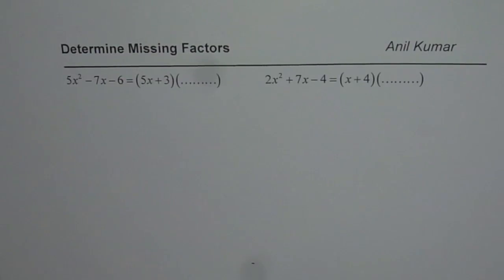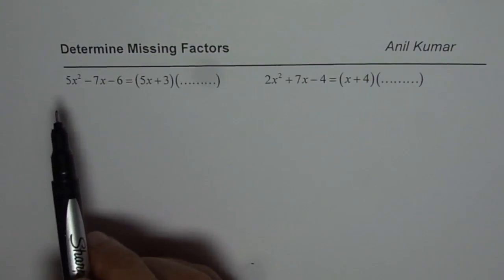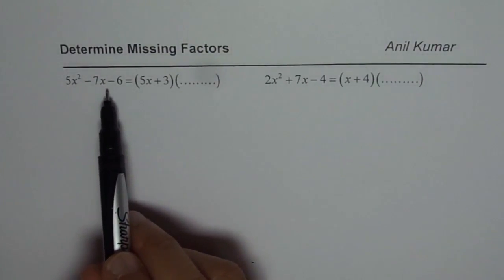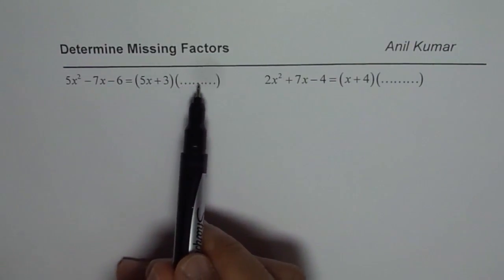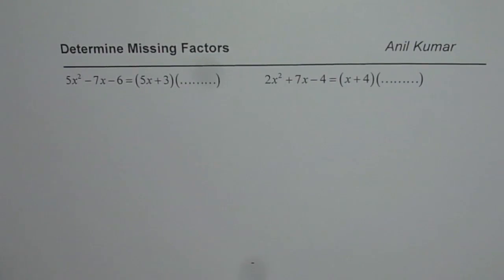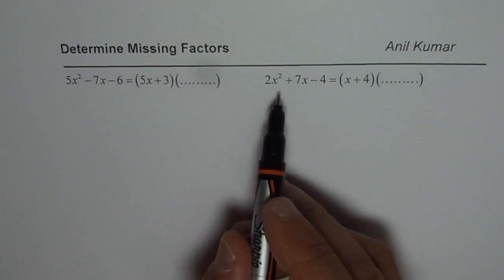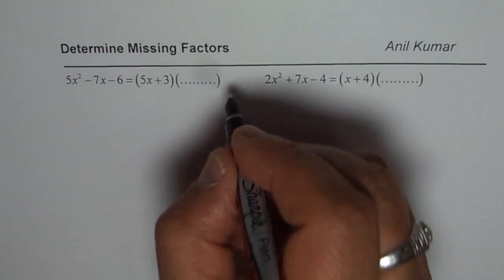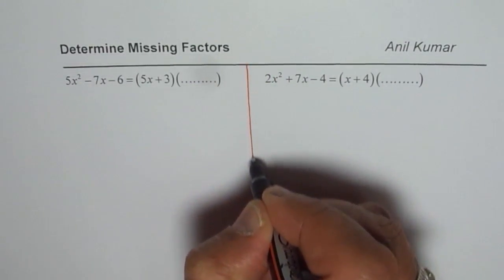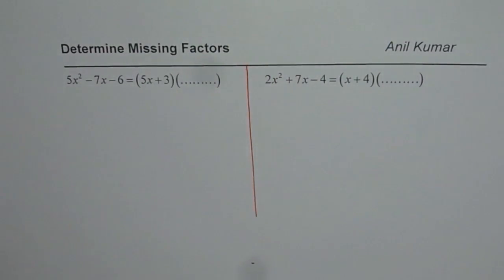I'm Anil Kumar and here we have some review questions on factoring. You need to find the missing factors. The question is 5x squared minus 5x minus 6 equals 5x plus 3 times what? We have two questions here. The second one is 2x squared plus 7x minus 4 equals x plus 4 times what? So one of the factors is given to us. You need to find the other factor.